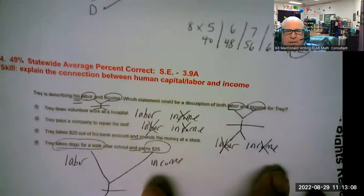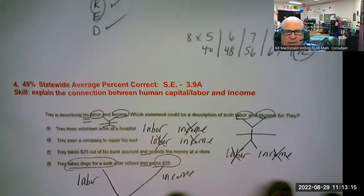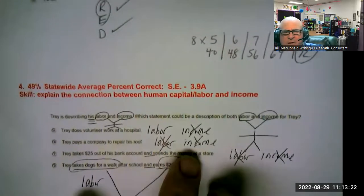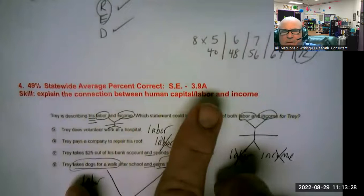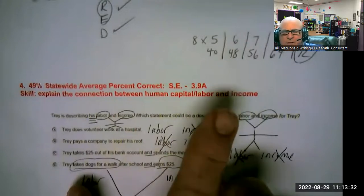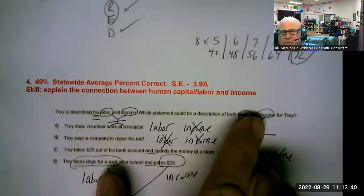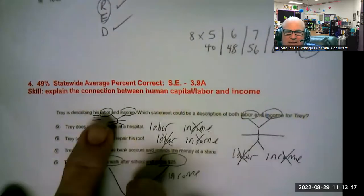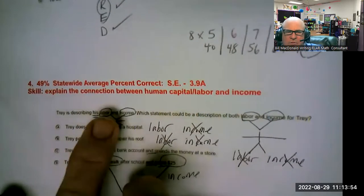The last one has to do with labor and income, student expectation 3.9A. Again, less than half of the kids in Texas got this question correct. Remind your kids that if you have a compound subject, something that has to do with labor and income, then you need an answer choice that relates to both of those: labor meaning the work that you do and the income being the money that you receive for doing that work. It's important that you understand it's his own.